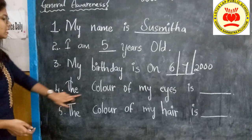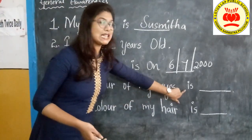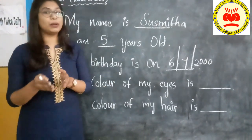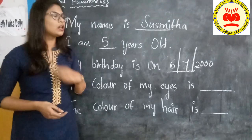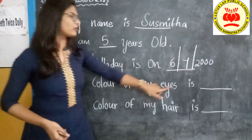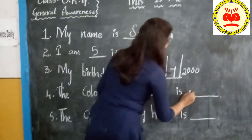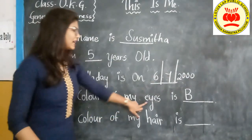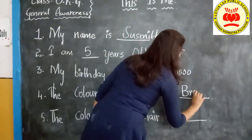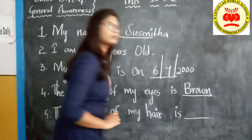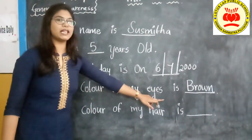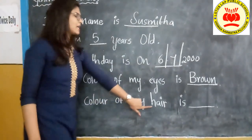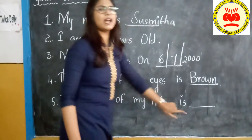Next thing — the color of my eyes is. Some of you will have black, brown, grey, or blue eyes. As my eye color is brown, I am going to write my color here. The color of my eyes is brown. The color of my hair is brown.